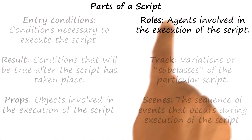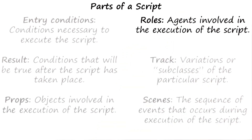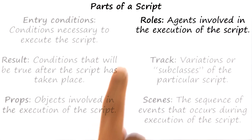The fourth part of a script is roles. These are the agents involved in the execution of the script. As an example, in the restaurant script, it might be a customer who goes to a restaurant, the owner of the restaurant, the waiter or the waitress in the restaurant, and so on.